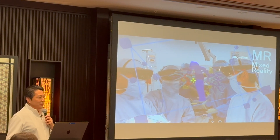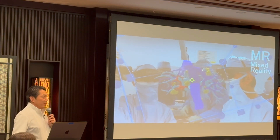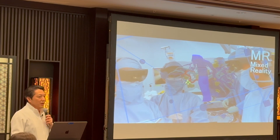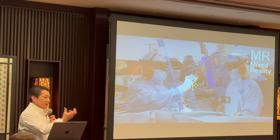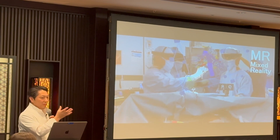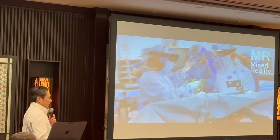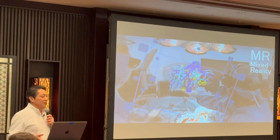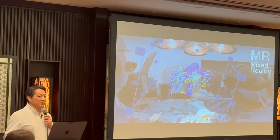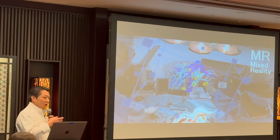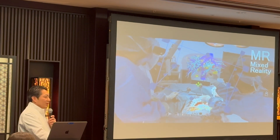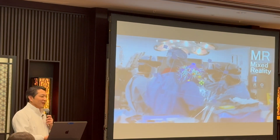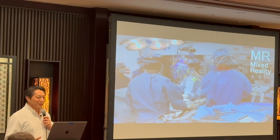In actual surgery, we wear mixed reality goggles to share the location and position of each surgeon's head and hands, as well as the patient data. We can see the same location and position of the patient's anatomy during surgery in front of the patient's abdomen. This patient has multiple metastases from colon cancer to the liver, and we need to resect all cancers.